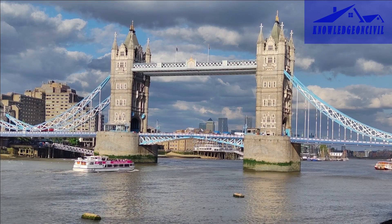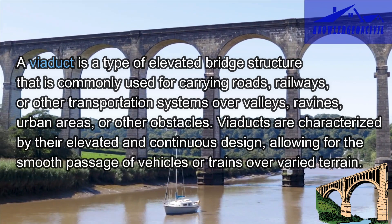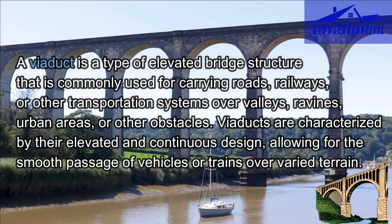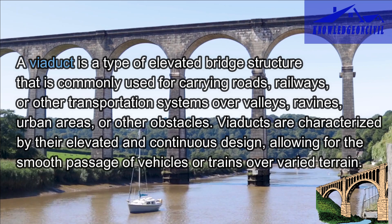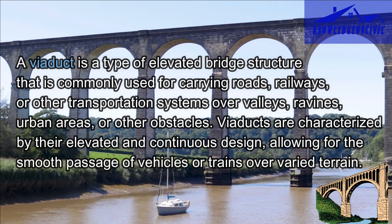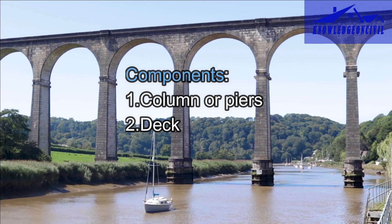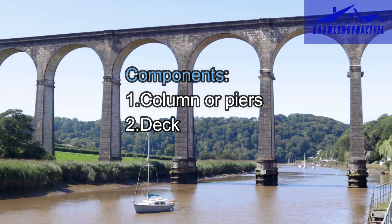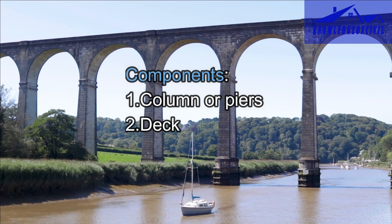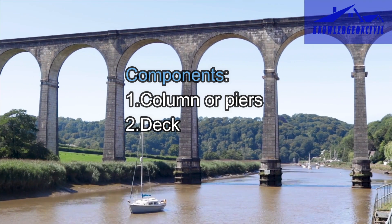A viaduct is a type of elevated bridge structure commonly used for carrying roads, railways, or other transportation systems over valleys, ravines, urban areas, or other obstacles. Viaducts are characterized by their elevated and continuous design, allowing for the smooth passage of vehicles or trains over varied terrain. They are supported by columns or piers spaced at intervals along the length of the structure, which provide vertical support and distribute the viaduct's weight to the ground. The deck is the horizontal surface that carries vehicles, trains, or pedestrians, spanning between the columns or piers.